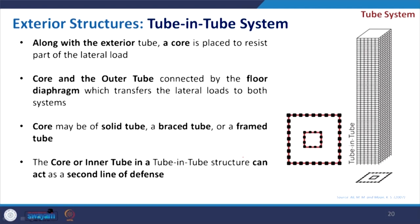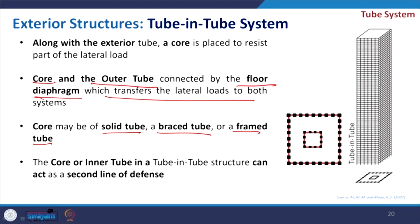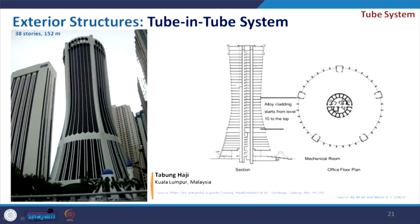Coming to the last category of tube system — tube-in-tube — where you have an interior tube and an exterior tube. The interior tube may be solid, braced, or frame tube. The core and the outer tube are connected by the floor diaphragm, which transfers the lateral load to both systems. Along with the exterior members, the interior core also takes some portion of the lateral load, which is why you can go even higher. An example is Tabunghaji, which has a circular form with columns placed outside as one tube and a core system at the center — a good example of tube-in-tube.